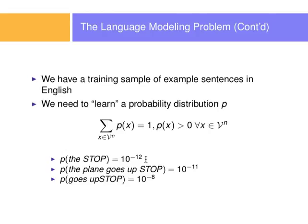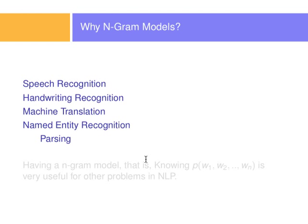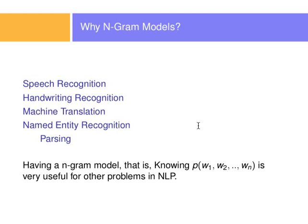For example, the probability of just 'the' (end of sentence) might be 10 to the negative 12th. The probability of 'the plane goes up' might be 10 to the negative 11th, since it's more common than ending on 'the'. The probability of 'goes up' might be 10 to the negative 8th, because many sentences end in 'goes up'. So if I have a probability model of all these sentences, I know how likely a sentence is to appear. This is extremely useful for speech recognition, handwriting recognition, machine translation, named entity recognition, and parsing — many problems in NLP.